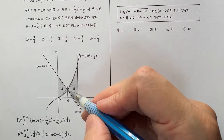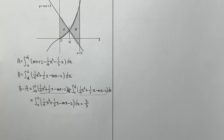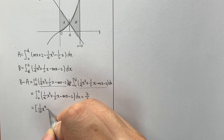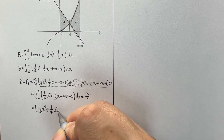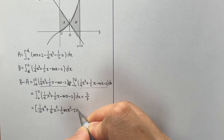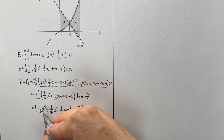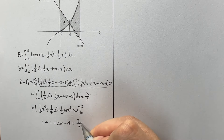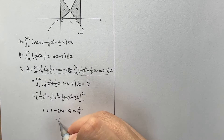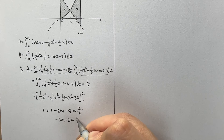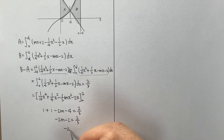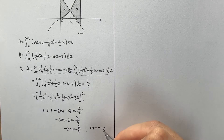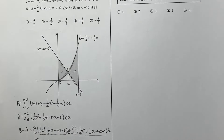0부터 2까지 한 번에 적분하면 (1/16)x⁴ - (1/4)x² - (1/2)mx² - 2x를 0부터 2까지 적분합니다. 2를 대입하면 1 - 1 - 2m - 4 = 3/2가 되어야 합니다. -2m - 4 = 3/2, -2m = 3/2 + 4 = 11/2, m = -11/4이 되어야 하므로 정답은 3번입니다.